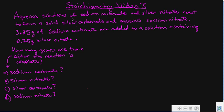Let's take a look. Aqueous solutions of sodium carbonate and silver nitrate react — those are your two reactants. They form a solid, which is silver carbonate, and then you're left with aqueous sodium nitrate. The problem tells you that we're going to put in 3.25 grams of sodium carbonate and 2.75 grams of silver nitrate.